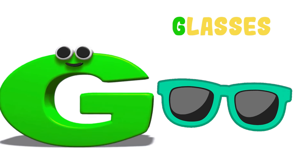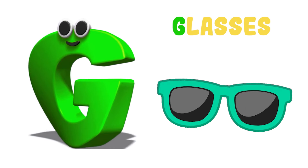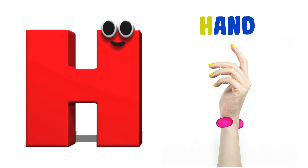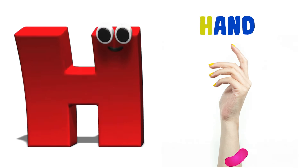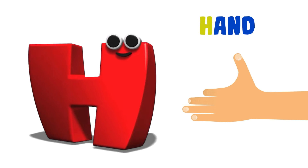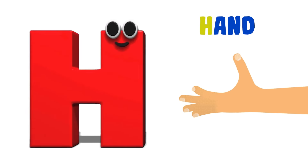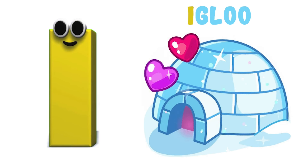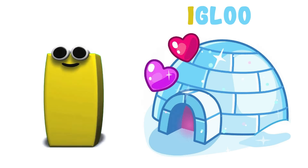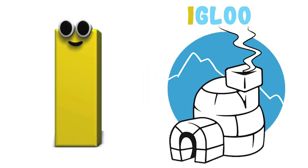G is for Glasses. G, G, Glasses. G, Glasses. H is for Hand. H, H, Hand. H, H, Hand. H, Hand. I is for Igloo. I, I, Igloo. I, Igloo.